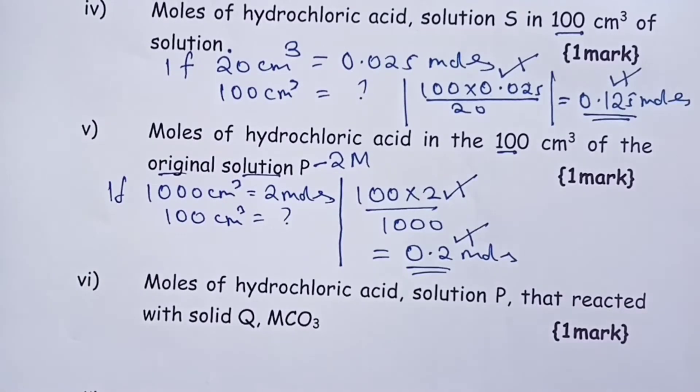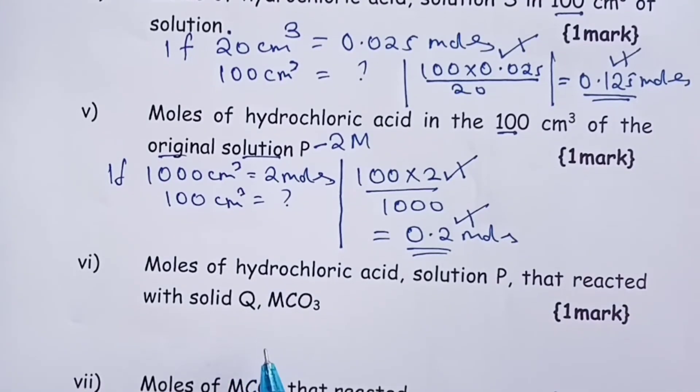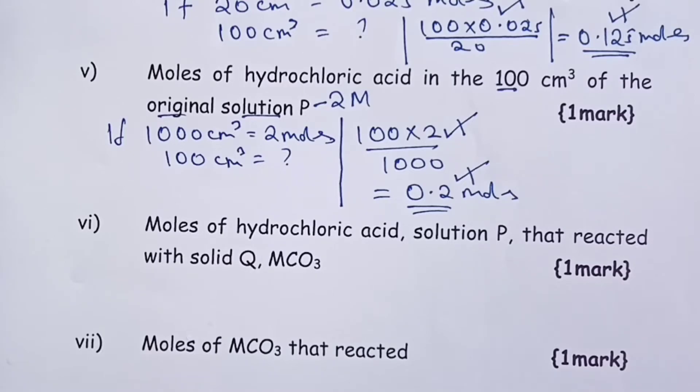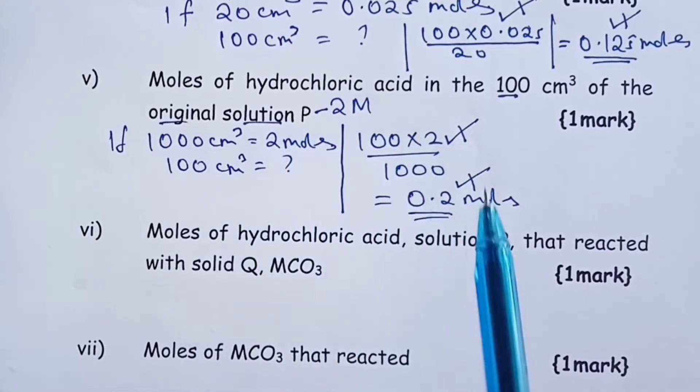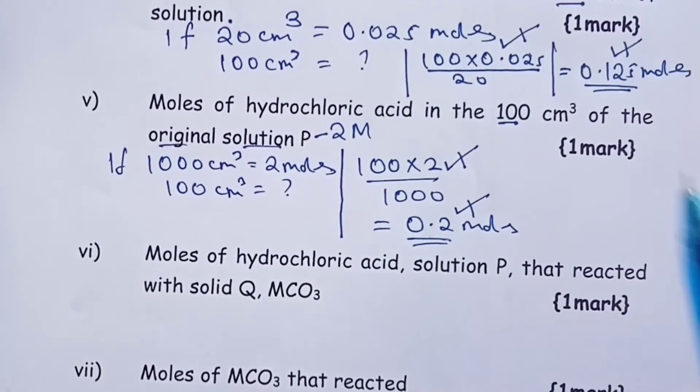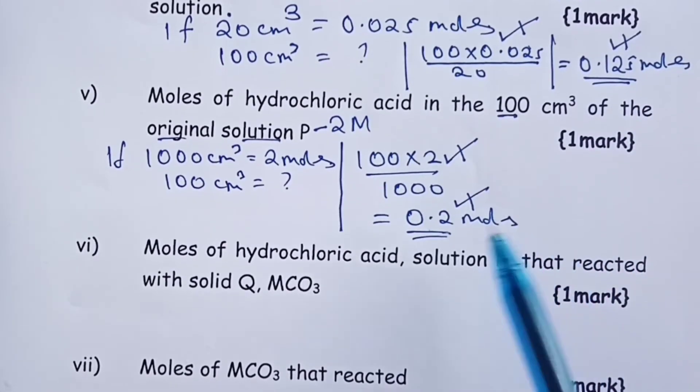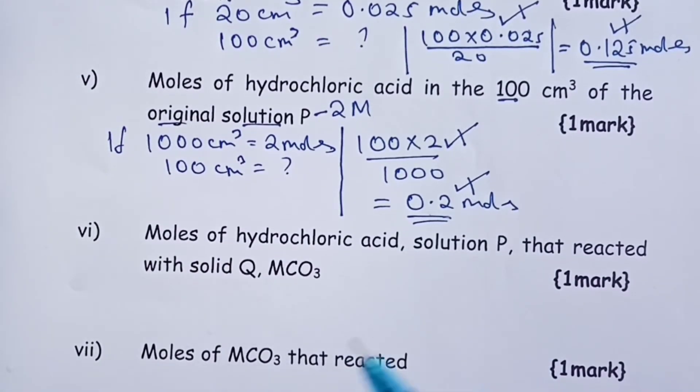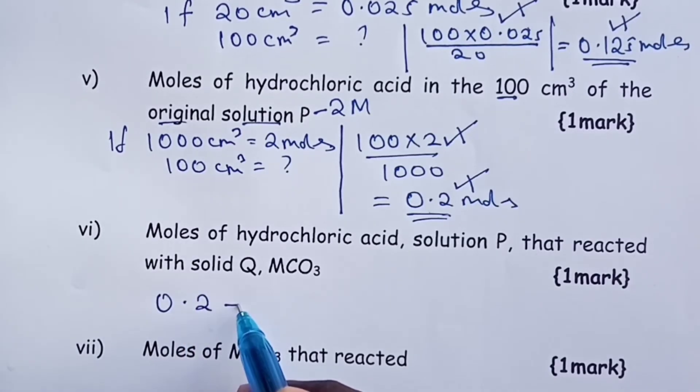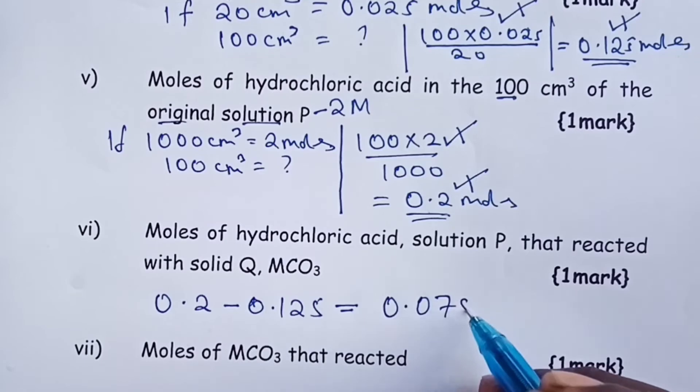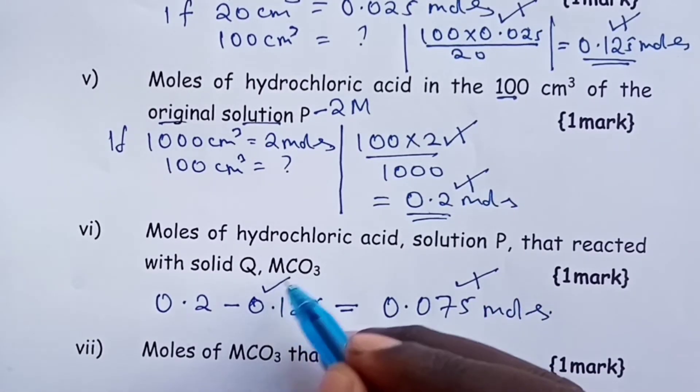Now, the next question. Moles of solution P that reacted with the carbonate. Here, it's all about understanding what goes on in a back titration experiment. We took 0.2 moles of P, we put in our M carbonate, and then, during titration, we only used 0.125 moles. So, it means, the difference between these two moles is actually the number of moles of solution P that reacted with our carbonate. So, the answer here is simply original minus the moles that were used during titration. So, the answer here now becomes 0.075 moles. Again, a half a mark for the answer, a half for the subtraction.